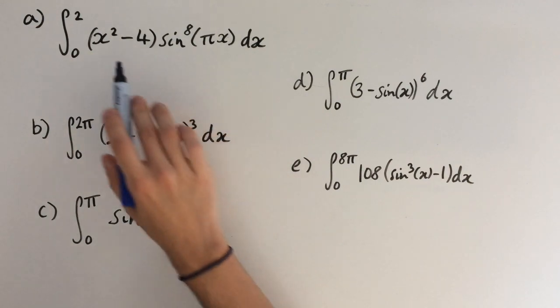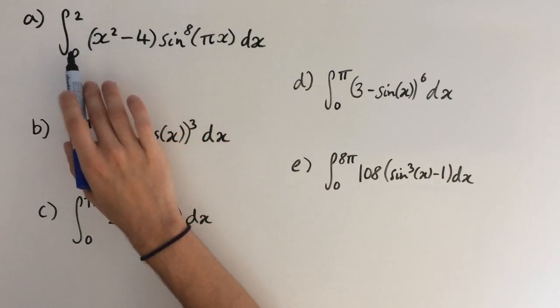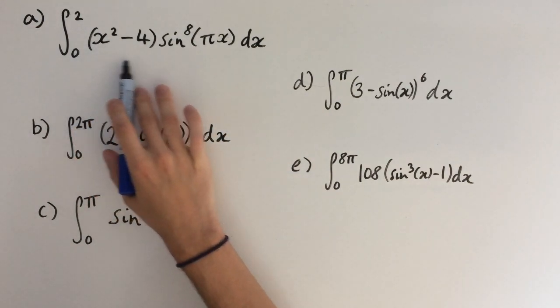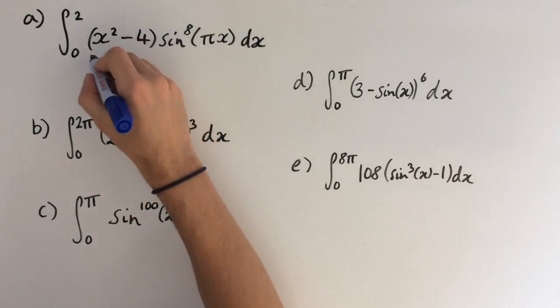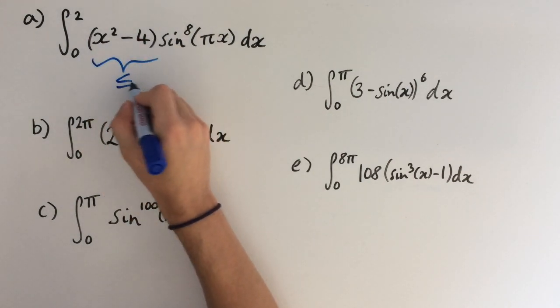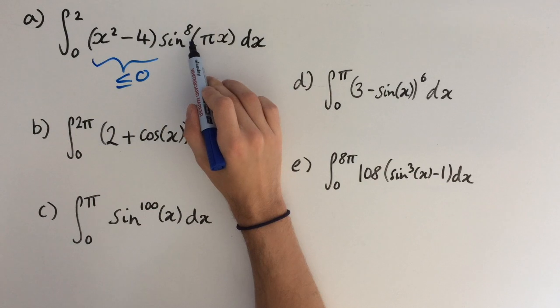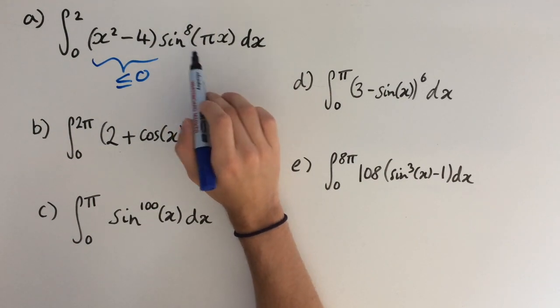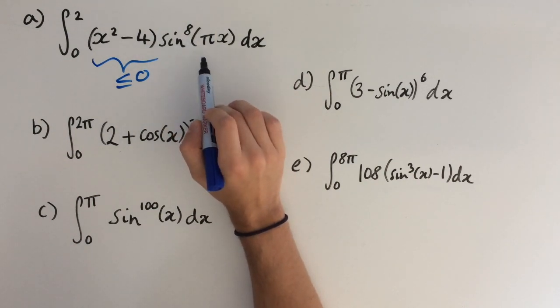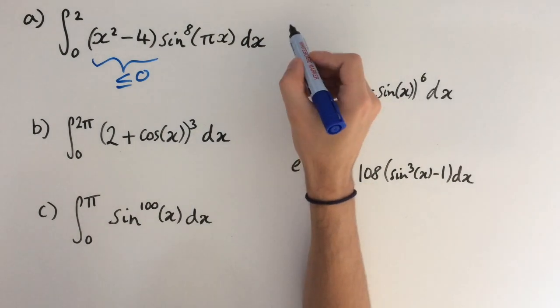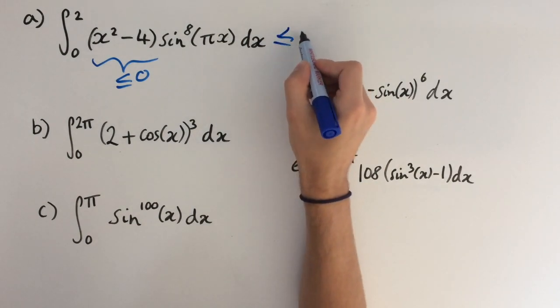If we start with the first integral, we see that x squared minus 4 in the range between 0 and 2 is always going to be negative, less than or equal to 0. And sine to the power of 8 is always between 0 and 1. So a negative multiplied by a positive is still going to be negative. So we can work out that this integral is always going to be less than or equal to 0.